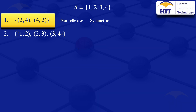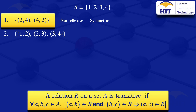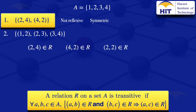Now checking if the first relation is transitive. By definition, a relation on set A is transitive if whenever (a,b) and (b,c) are in R, then (a,c) is in R. We look for pairs with common middle elements: (2,4) and (4,2) share the common element, so we check if (2,2) is in R. Since (2,2) is not in this relation, the transitivity condition is violated, so the relation is not transitive.